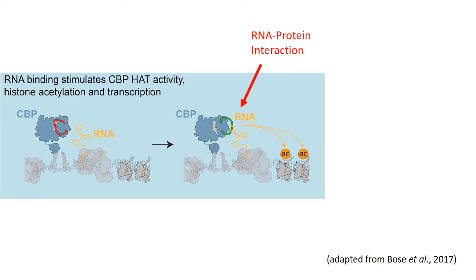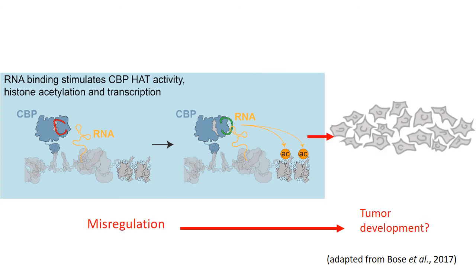Several researchers have utilized the method to identify the RNA that interacts with specific proteins. For example, Bose et al. utilized PARCLIP to demonstrate that RNA interacts with CBP, a protein that has a role in some cancers and development. They were able to show that RNAs identified via PARCLIP change the acetyltransferase activity of the protein, which is a mechanism used to alter gene expression. Changes in gene expression resulting from defects in CBP-RNA interactions could potentially play a role in the development of cancers.